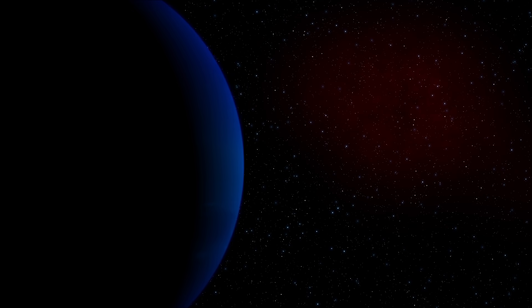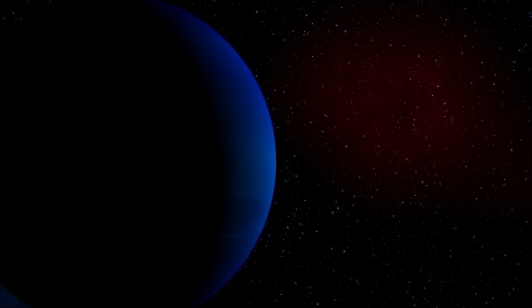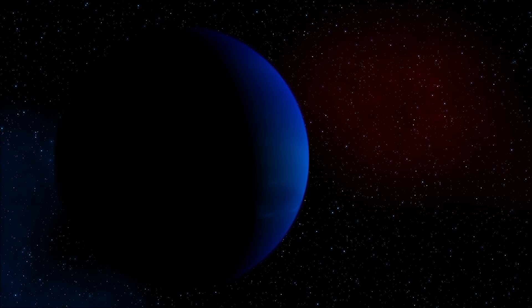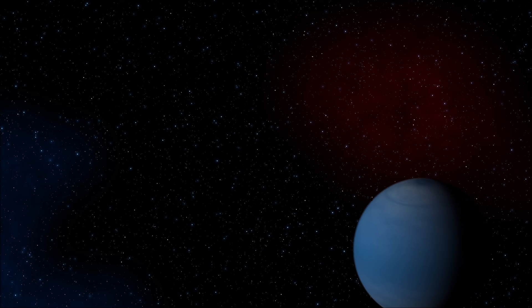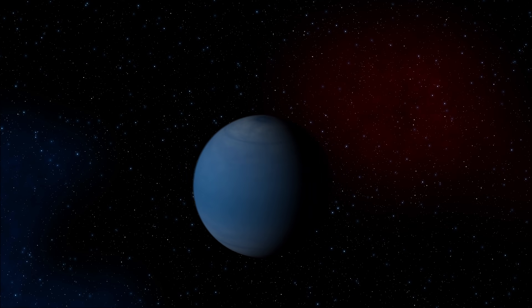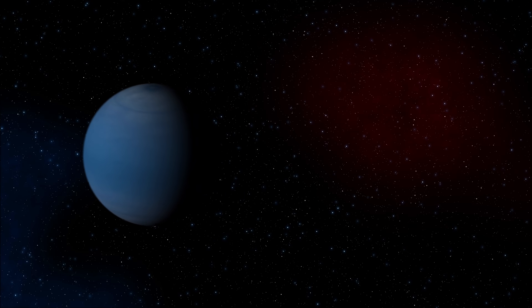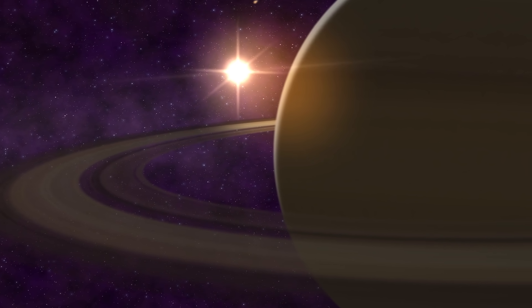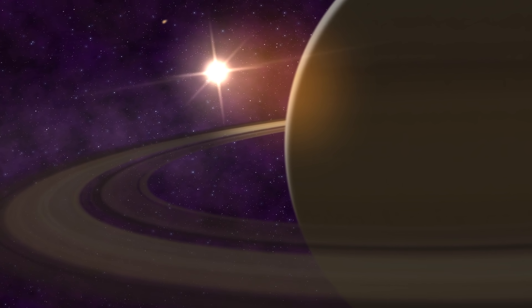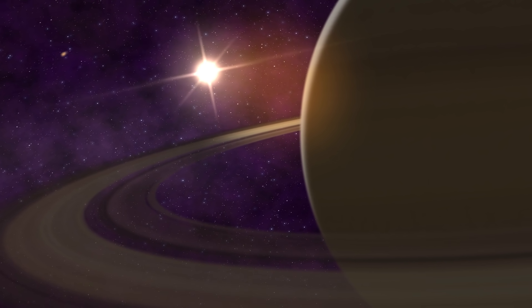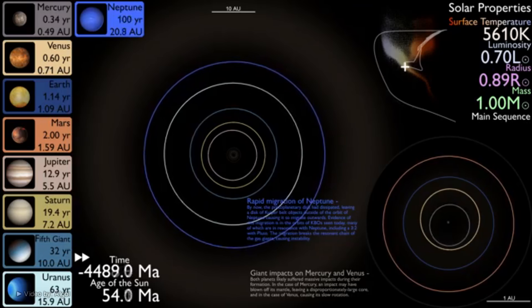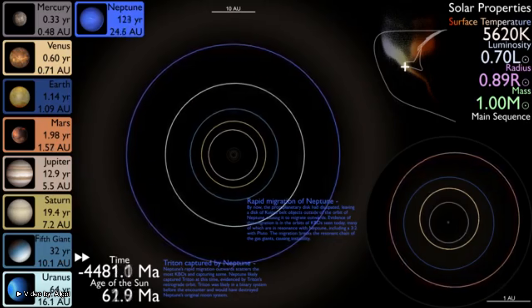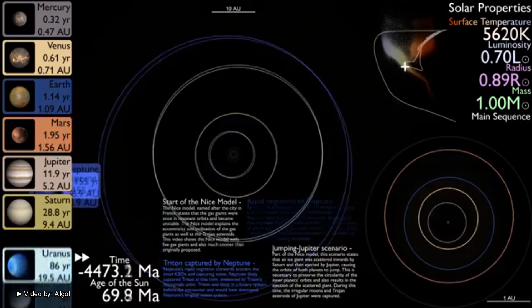As Neptune approaches a semi-major axis of 28 astronomical units, the orbital instability by far affects our fifth gas giant the most. Due to the break-up of the resonant chain, the instability scatters the additional planet inwards into a Saturn-crossing orbit, upon which it is pushed onto a highly eccentric Jupiter-crossing orbit, after which it is ejected from the solar system entirely following an encounter with Jupiter.